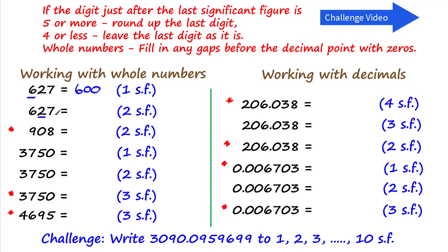For 627 to two significant figures, the second significant figure is in the tens column, representing 20. So 627 is between 620 and 630 — clearly closer to 630. Using the rules: we look to the next digit after the 2, which is a 7. It's 5 or more, so we round up, adding 1 to the 2 to give 63. We then fill back to the decimal point with a zero, giving 630.